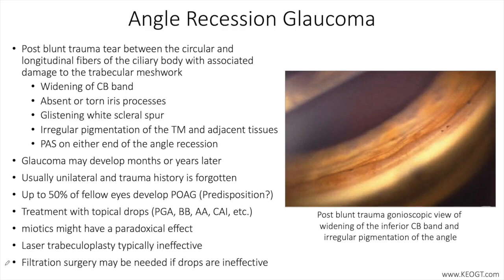Angle recession greater than 180 degrees has been shown to increase the likelihood of developing glaucoma in both the short-term and long-term follow-up period. A common teaching is that in those with angle recession glaucoma in one eye, glaucoma develops in the contralateral eye — devoid of any angle recession or history of trauma — about half of the time. This led to the belief that angle recession glaucoma develops in eyes predisposed to developing glaucoma already, and may also explain the low incidence of glaucoma overall in angle recession eyes.